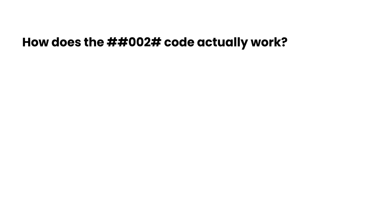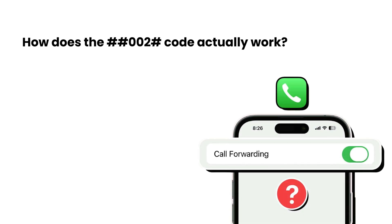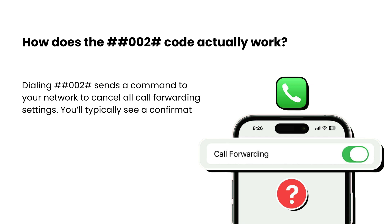How does the ##002# code actually work? Dialing ##002# sends a command to your network to cancel all call forwarding settings. You'll typically see a confirmation message like 'Call forwarding erased successfully.'